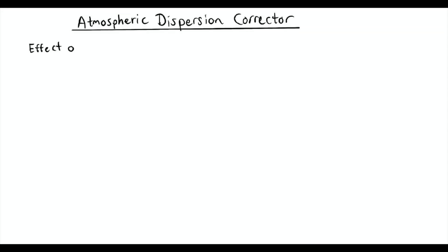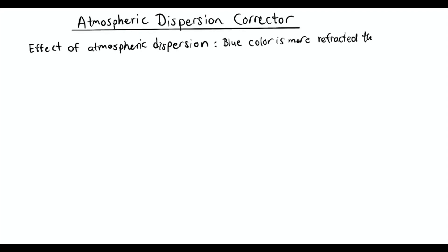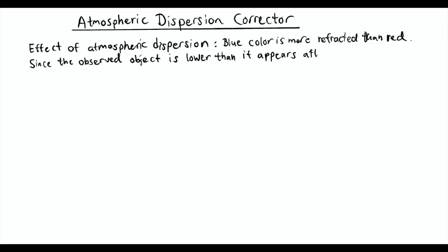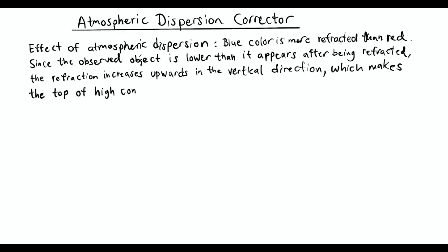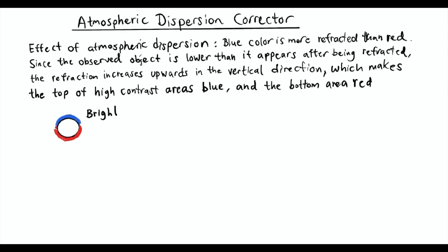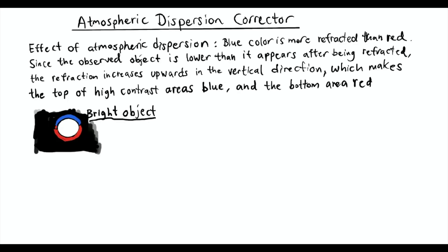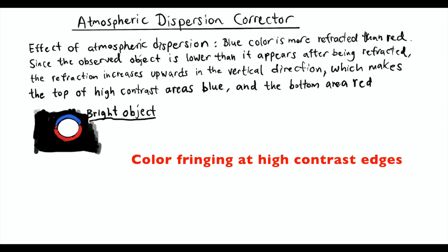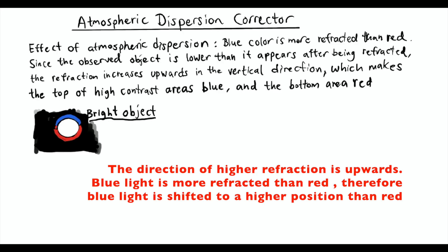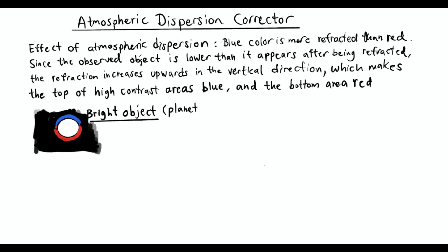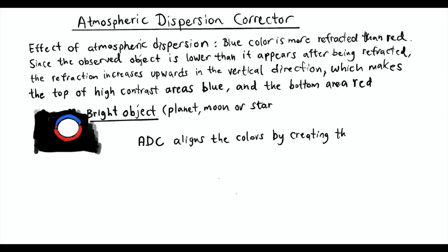Blue light is more refracted than red, which creates an angular separation of the colors. If the light from a planet is separated into red, green, and blue images, the blue image appears slightly higher in the sky than the green, and the red will be lower. Since the actual position of the observed object is lower than it appears in the sky, the downward direction is closer to the actual position and less refracted, while the upward direction is more refracted. As a consequence, there will be blue fringing at the top of high contrast areas and red fringes at the bottom, which is typically the case when imaging planets low in the sky.